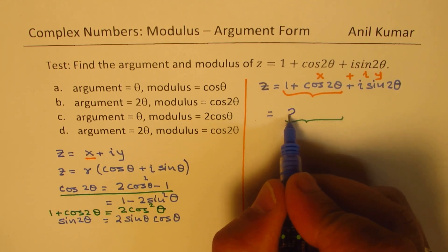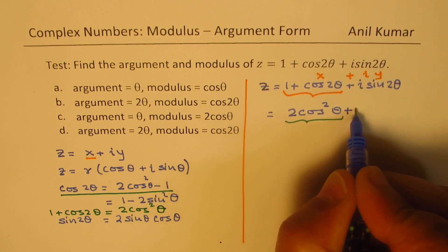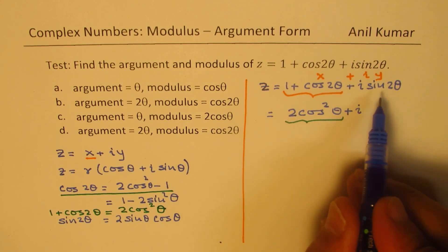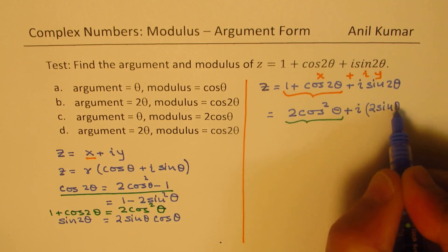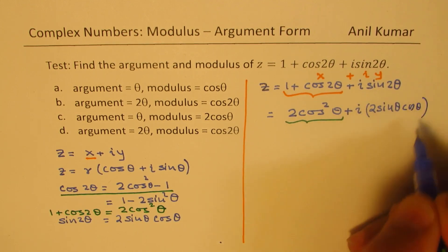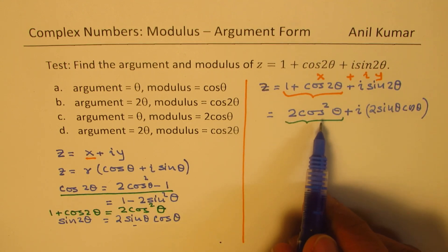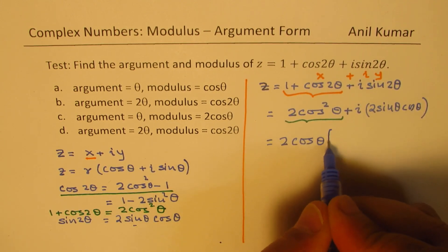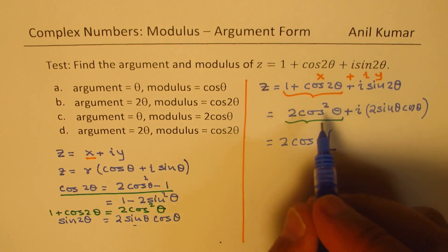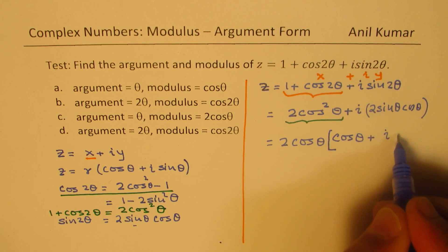We will get this as 2 cos square theta plus i. Now, sin 2 theta can be written as 2 sin theta cos theta, as mentioned here. From here, we can take 2 cos theta common. So we will get 2 cos theta common. Once you do that, you are left with cos theta plus i sine theta.